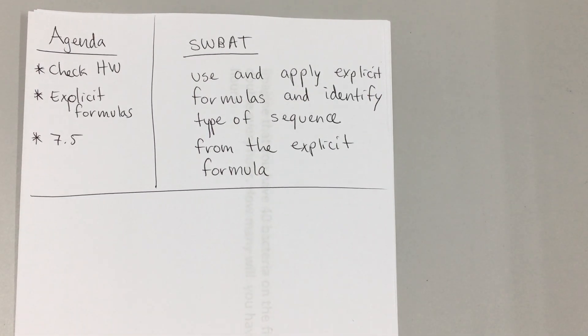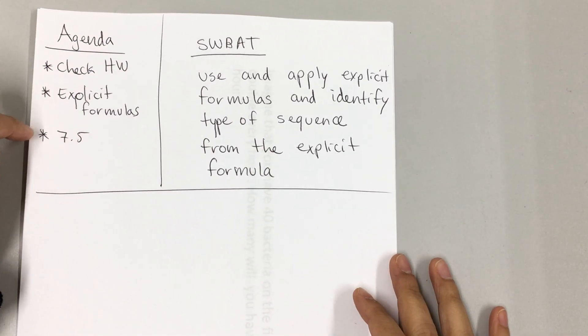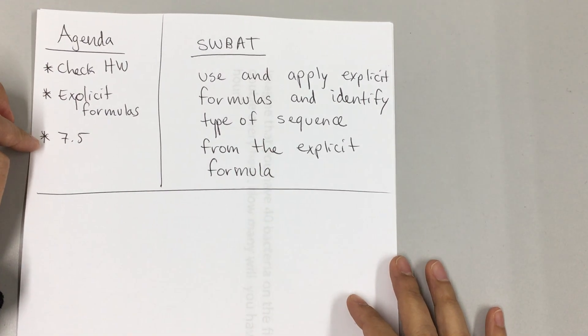Hello students, today's agenda is to check homework. We'll be learning about explicit formulas and you will be able to do 7.5.